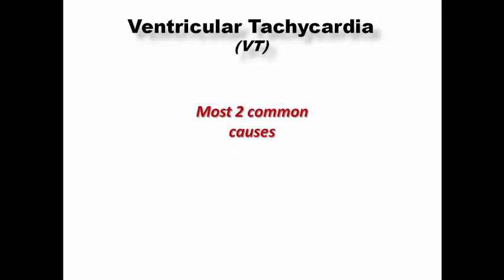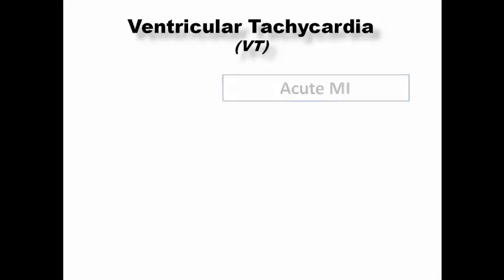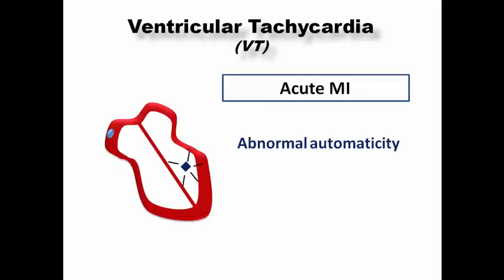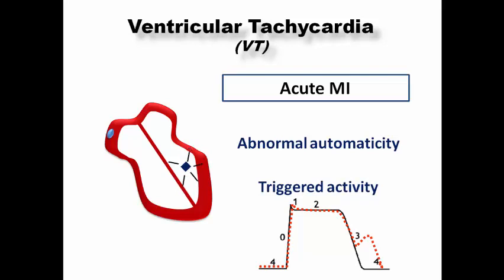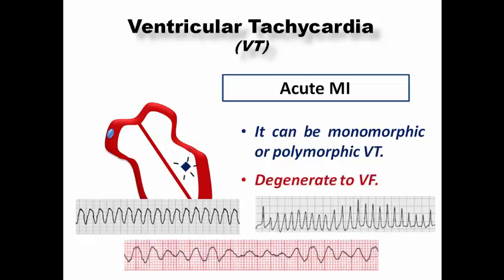The two most common causes of VT are scar-related VT and acute MI. Acute MI resulting from temporary cessation of blood flow to a region of myocardium can result in abnormal automaticity or triggered activity leading to ventricular tachycardia, and sometimes it is the initial presentation of the patient. It can be monomorphic or polymorphic VT, or it may degenerate into VF resulting in sudden cardiac death even before the patient arrives at the ER.